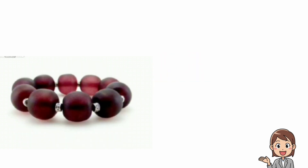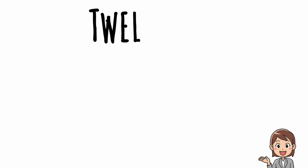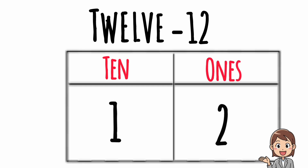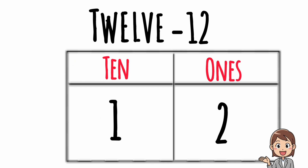Twelve — T, W, E, L, V, E. Twelve. Put this twelve in the tabular column. So twelve contains one ten and two ones.